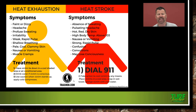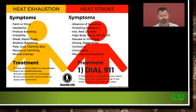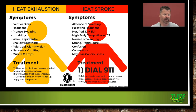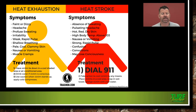Here's the difference between heat exhaustion and heat stroke. Heat exhaustion symptoms: faint or dizzy, headache, profuse sweating, irritability, weak rapid pulse, shallow breathing, pale cool clammy skin, nausea or vomiting, and muscle cramps. Treatment: have the victim lie down in a cool, shaded, or air-conditioned area; drink water if conscious; use caution when the victim stands up; apply cold compresses. Heat stroke symptoms: absence of sweating, pulsating headache, hot red dry skin, high body temperature usually above 103°F, nausea or vomiting, strong rapid pulse, confusion, convulsions, and may lose consciousness.